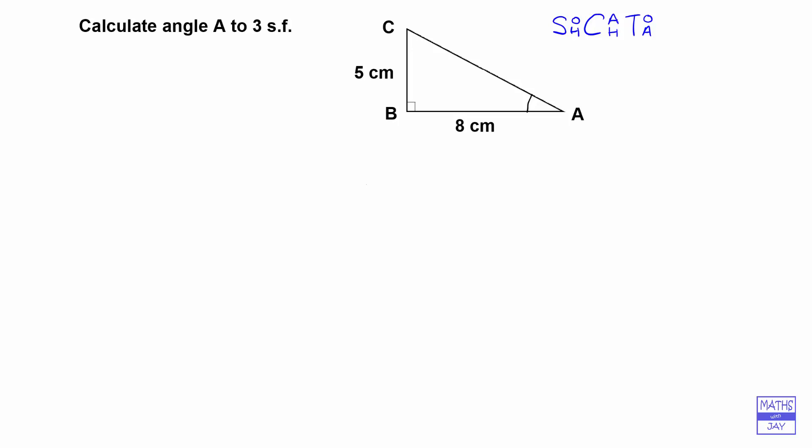So what we do first of all with the triangle is write down which side is which, starting with the hypotenuse. That's the longest one, opposite the right angle. Then the side touching the angle that we're interested in is the adjacent side, so that's A. And the side not touching the angle is the opposite side.